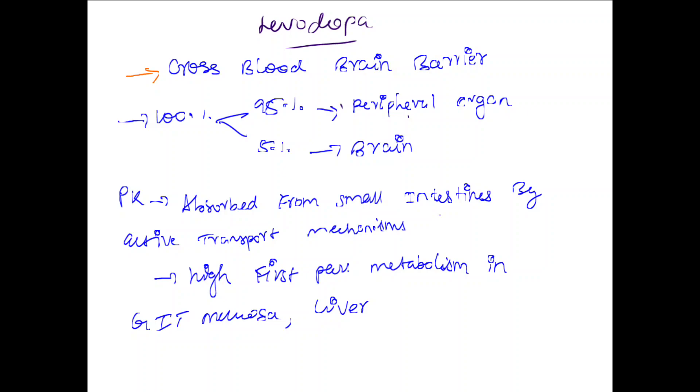Levodopa crosses the blood-brain barrier. Of the drug, 95% is absorbed in peripheral organs and 5% reaches the brain. It is absorbed by active transport mechanism and has high first-pass metabolism in the GIT mucosa and liver.